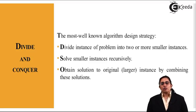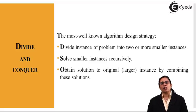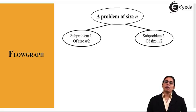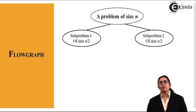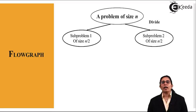We obtain a solution to the original larger instance by combining the sub-solutions. Any problem divided into sub-problems has its solutions formed by combining each of the sub-solutions to give the complete final solution. The flow graph for divide and conquer follows the same strategy — it shows that a problem of size n is taken, and that problem is subdivided. As an example, it is divided into two smaller sub-problems, and that part is known as division.